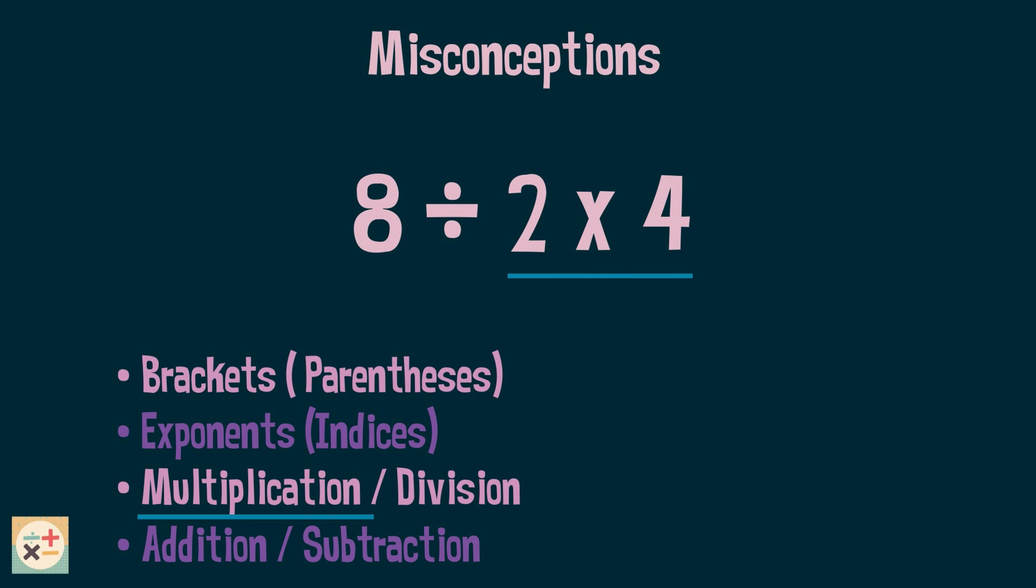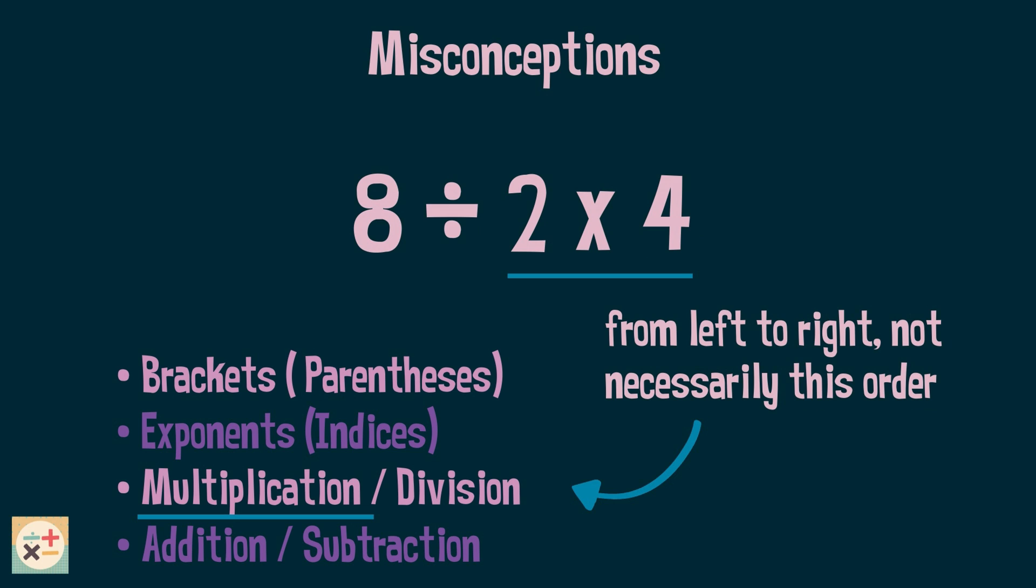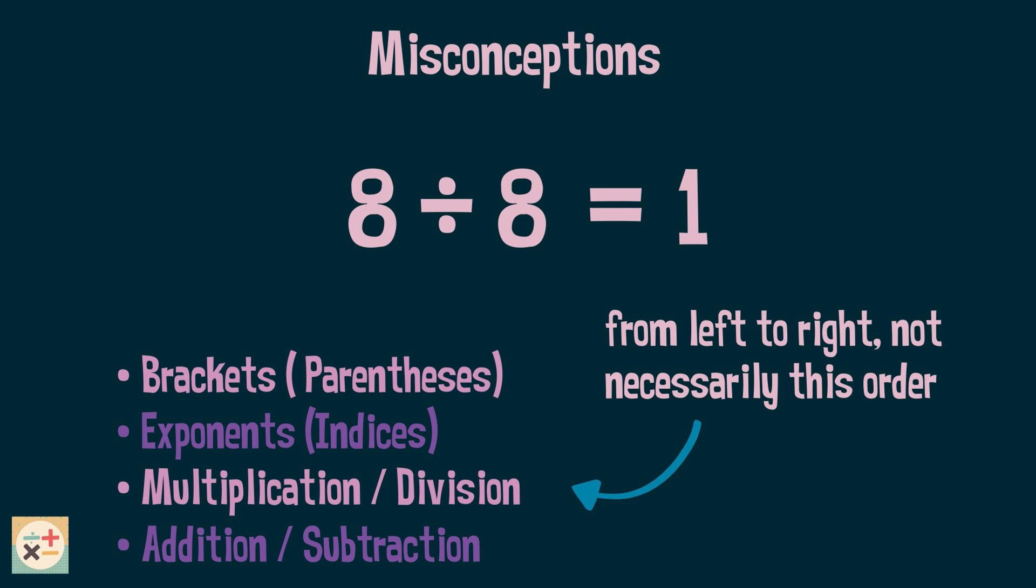If the multiplication is incorrectly applied first, we end up with 8 divided by 8, which gives us an answer of 1. But we need to remember that this step should be applied from left to right, in the order that they occur in the expression.